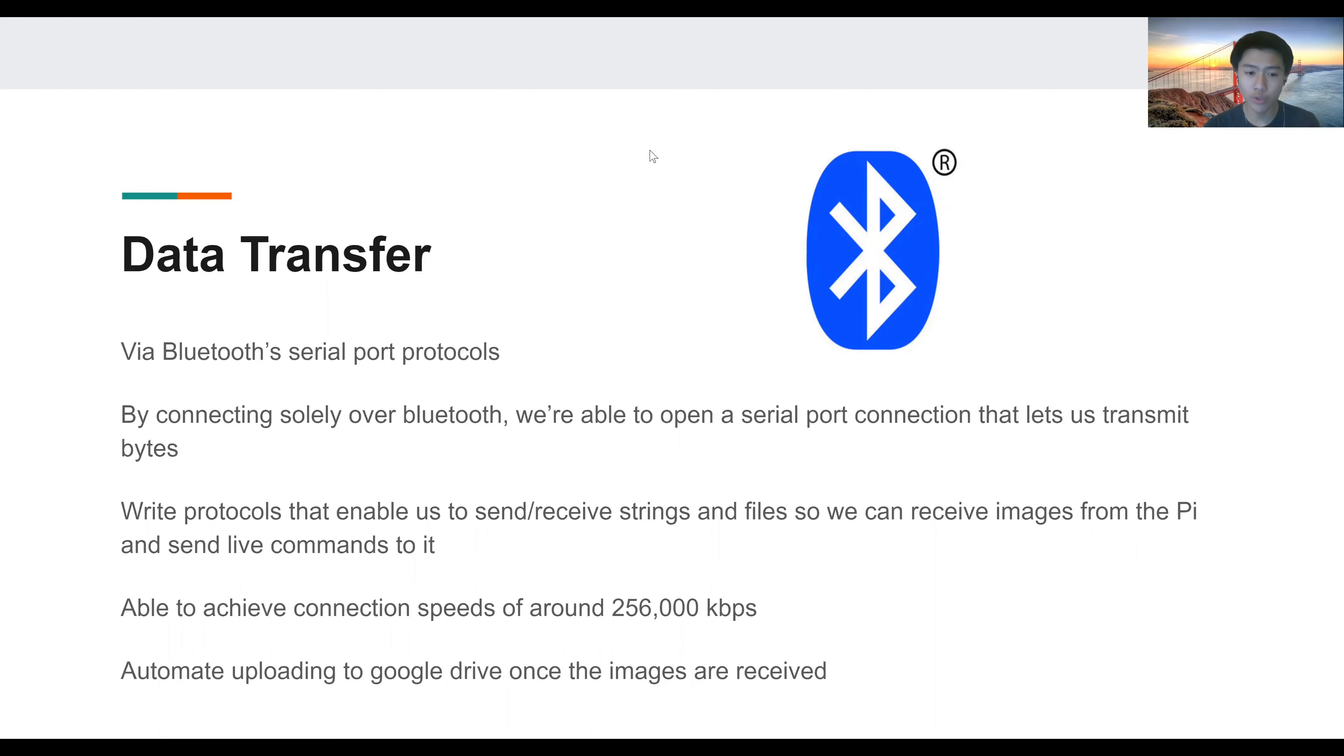And by connecting solely over Bluetooth, which we can tell the Raspberry Pi to automatically do on startup, we're able to open a serial port connection that allows us to directly transmit bytes between the two devices. Once we're able to do that, we can write protocols that enable us to send and receive strings and files, so that we can receive images directly from the Raspberry Pi, and also send live commands to it to adjust things on the fly. Overall, we were able to achieve max connection speeds of around 256,000 kilobytes per second with this process, which means that it generally took us only a few seconds to send each image. Once images land on our desktop computers, we also automated the process to upload to Google Drive, so once the images land, they go directly up to a Google Drive folder in the cloud, where we can then manually sort through them and pick out which images we want to apply our image processing algorithms to.